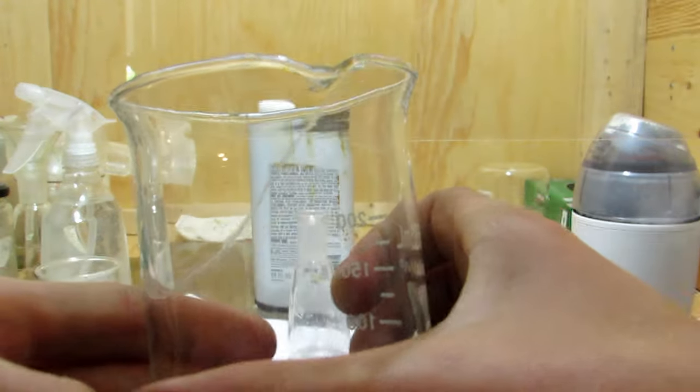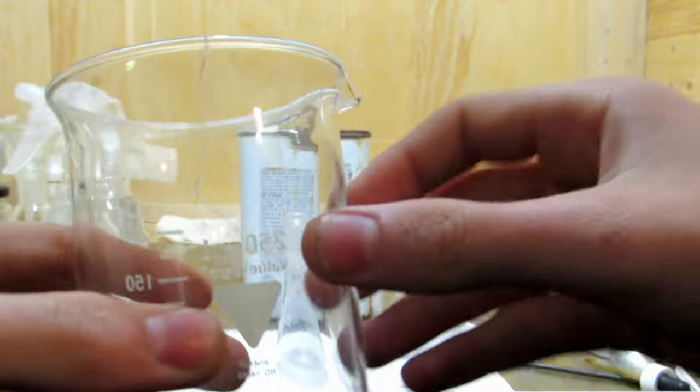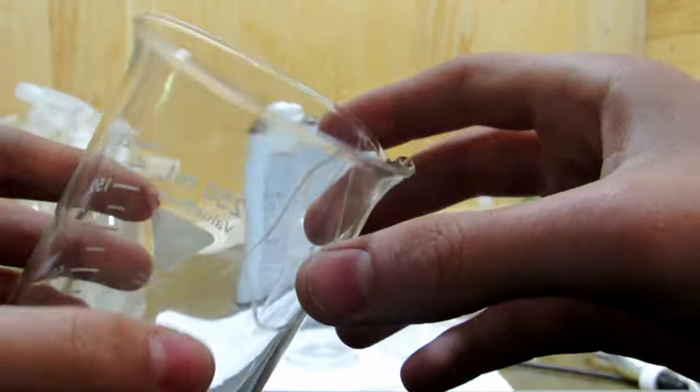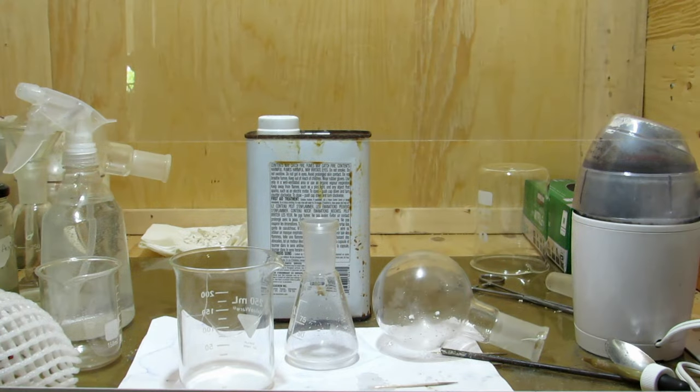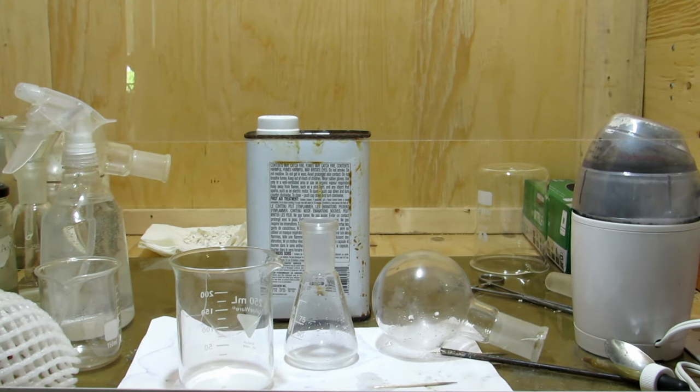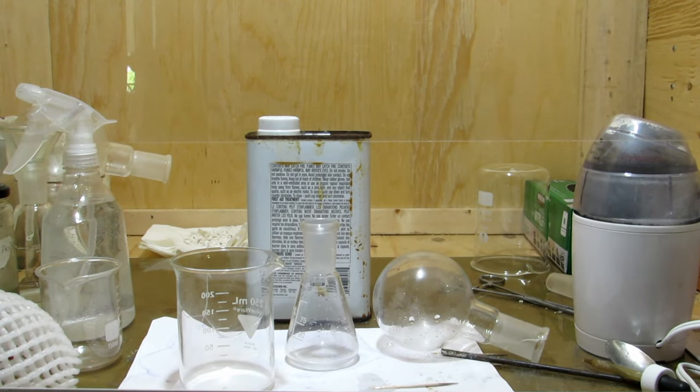And finally, the beaker, which looks relatively good. This can be used for most liquids. So there's basically how to fix old glassware so that you don't end up throwing it out, because that is a huge waste. Yeah, hopefully you guys can do this instead of throwing out your glassware, and hope you guys enjoyed. Wait, bye.